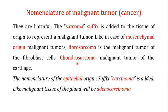Similarly, chondroma is the benign tumor of chondrocytes, but chondrosarcoma is the malignant tumor of cartilage cells. For the nomenclature of malignant tumors of epithelial origin, we use the suffix '-carcinoma.' For example, a benign tumor of a gland is known as adenoma, but if you add the suffix '-carcinoma' with 'adeno,' that represents the malignant tumor of the gland — so adenocarcinoma is the malignant tumor of the gland.